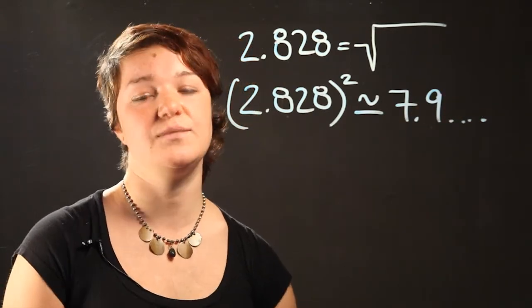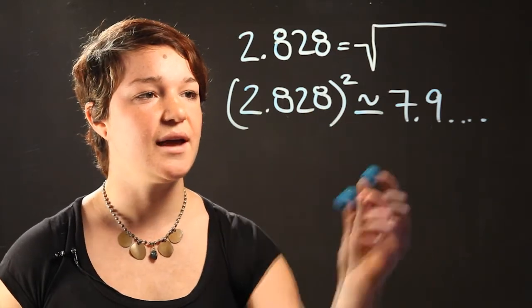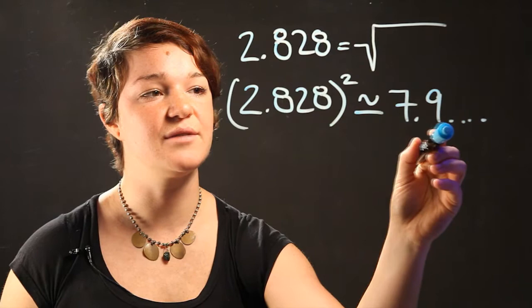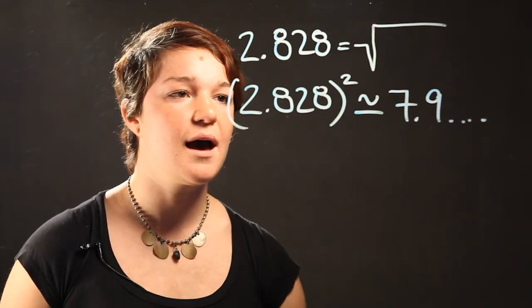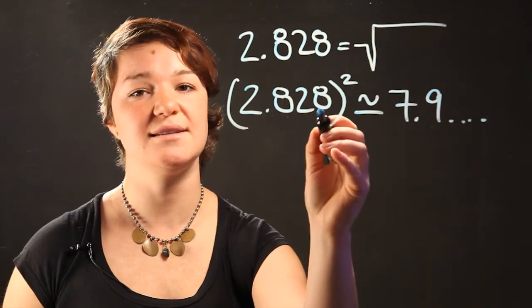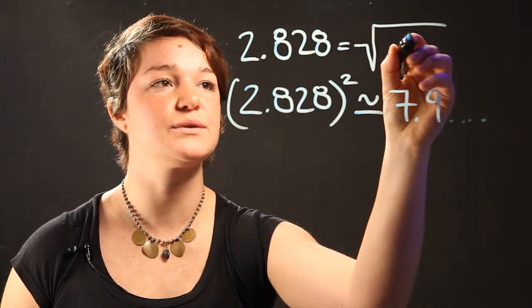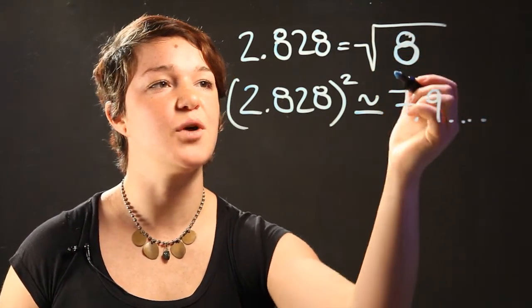So from here, you know that because 2.828 isn't an exact number, and when you square it you get 7.9939 for example. This means that 2.828 is derived from the square root of 8. It's a very rough approximation.